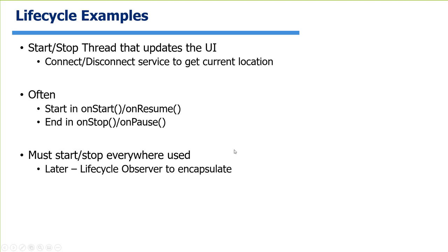You must pair start and stop everywhere that you're using some kind of thread or service. There are nice ways to do this with lifecycle observers, which I may cover in the class. One thing that's nice is you can bundle the start and stop into a single object, encapsulating that functionality so you're sure it's started and stopped in the right place always.